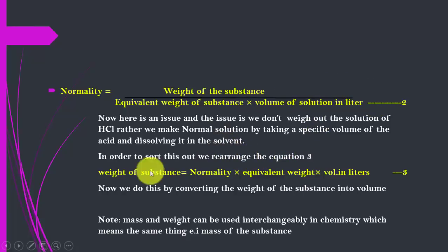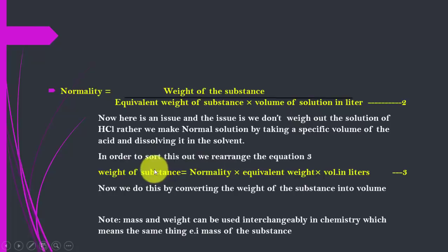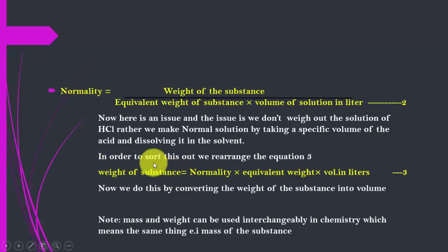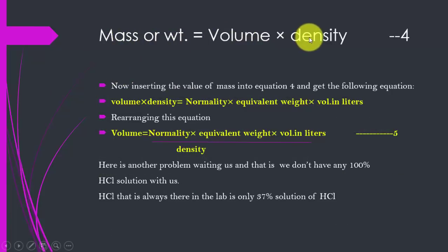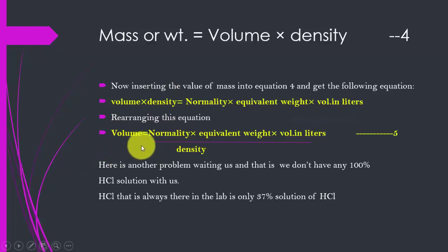After rearranging, the new equation gives us: normality × equivalent weight × volume of solution in liters equals weight. Since we don't weigh out HCl but instead measure its volume, we use the relation: weight = volume × density. Substituting this into the equation gives us: volume × density = normality × equivalent weight × volume in liters.